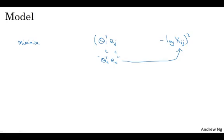What we're going to do is solve for parameters theta and e using gradient descent to minimize the sum over i equals 1 to 10,000, sum over j from 1 to 10,000 of this difference. You want to learn vectors so that their inner product is a good predictor for how often the two words occur together.